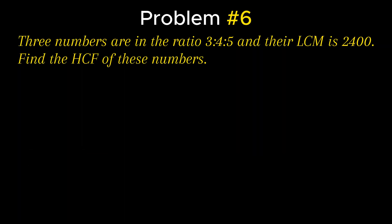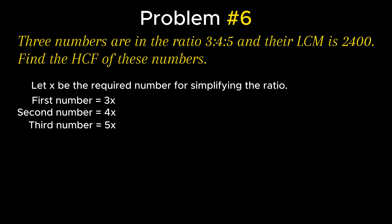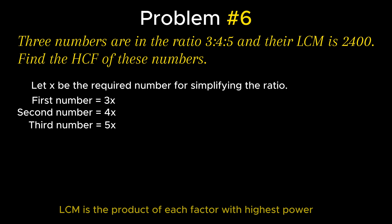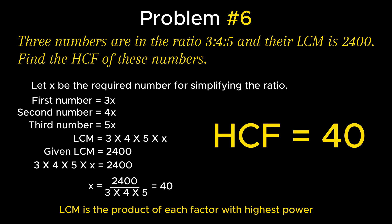Problem 6 states that 3 numbers are in the ratio 3:4:5 and their LCM equals 2400. Find the HCF of these numbers. Let x be the common factor. Therefore the first number equals 3x, the second equals 4x, and the third equals 5x. The LCM equals 3 × 4 × 5 × x. Since LCM equals 2400, we get x = 2400 ÷ 60 = 40. Therefore 40 is the HCF of these three numbers.